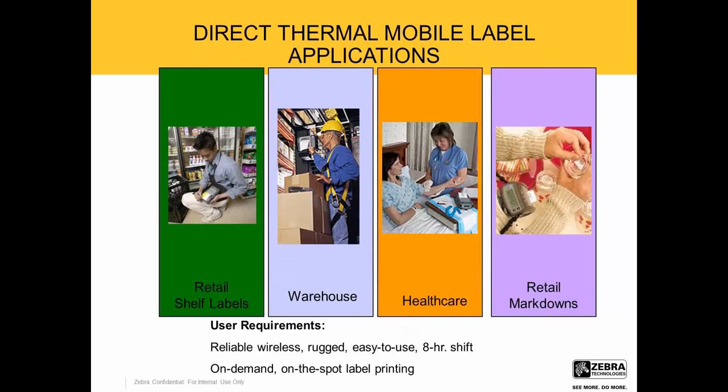Here are some direct thermal mobile applications. In healthcare, for specimen and pharmacy labels, you can do it at the bedside — scan the patient's wristband and print a label for specimen collection so you're not labeling the wrong patient's information. In manufacturing for shipping, receiving, and asset management. Transportation and logistics for pick, pack, and apply, and shipping and receiving. In retail, distribution centers, in-store shelf labeling, and markdown — making it easy for an employee walking around to mark down products.